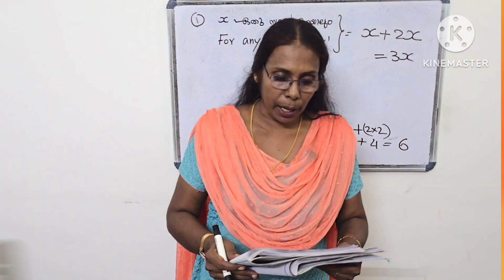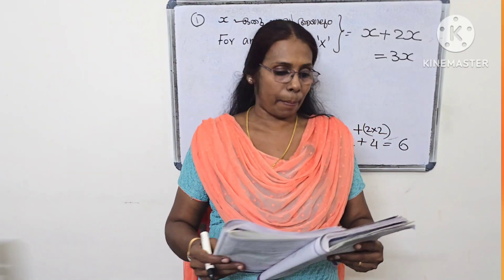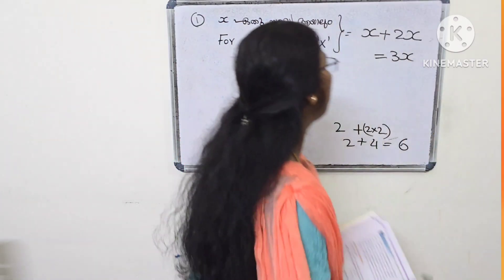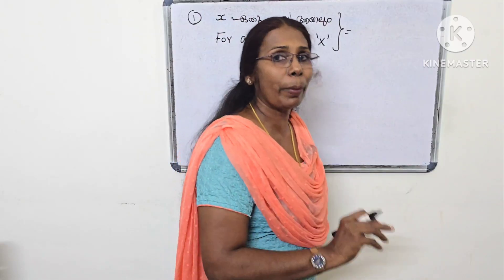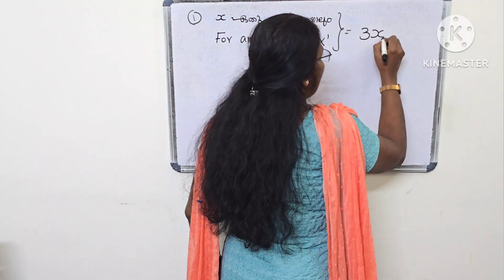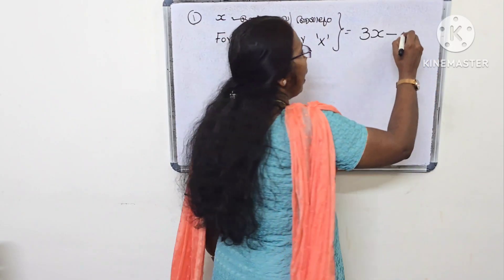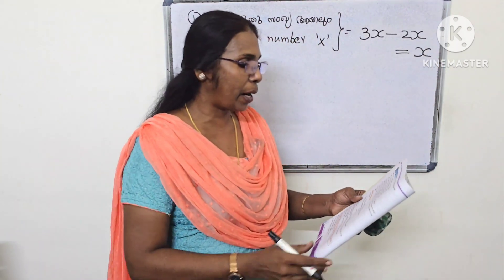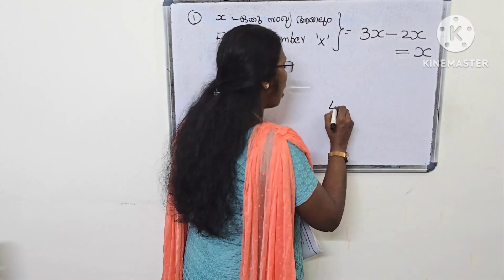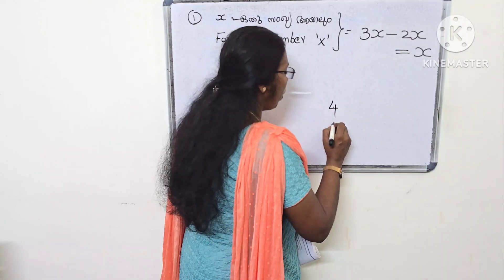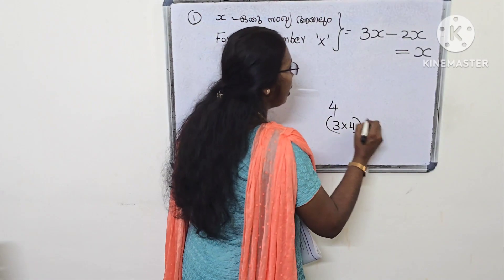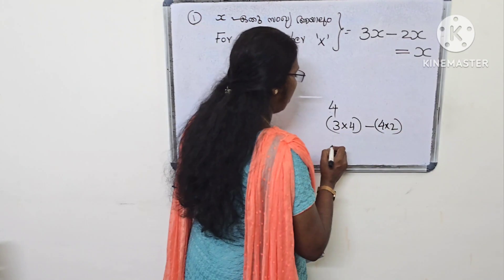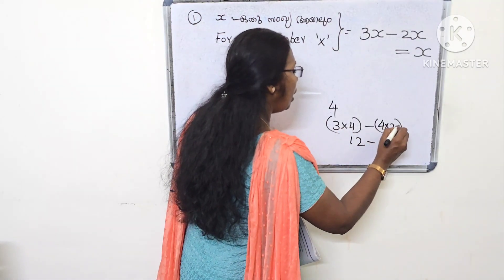Twice the number subtracted from twice the number gives the number. If you have 3x, then you have 3x. If you have 2x, then 2x. If you have 3x and 4x, then you have 7x.